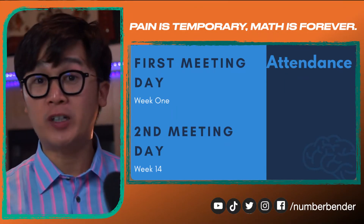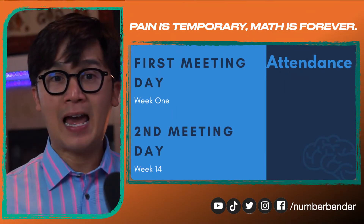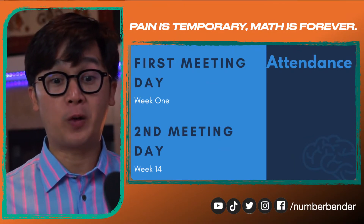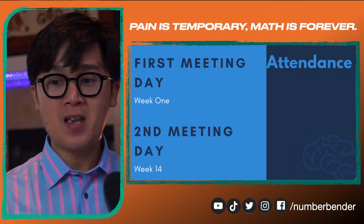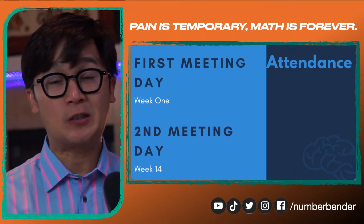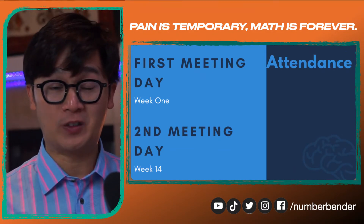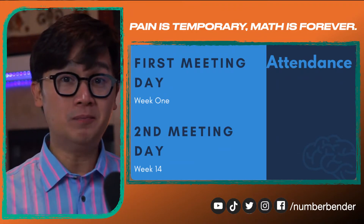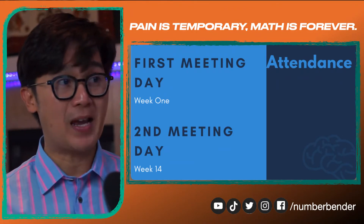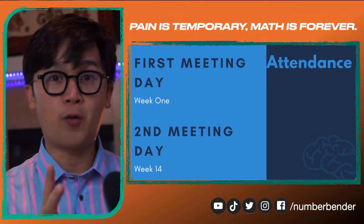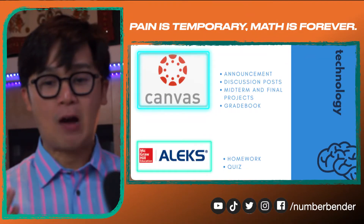For week 14, that will be the last lecture week of the semester. We're going to be discussing how you're going to be keeping your A, or how you're going to hopefully get at least a grade of C so that you don't need to repeat Math 203 all over again. I'm pretty sure that none of you will have that problem. So two mandatory meetings will be on week one and on week 14.